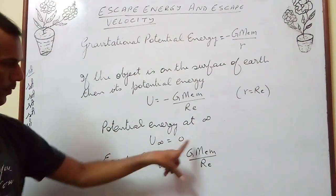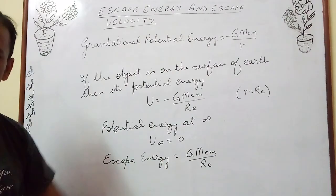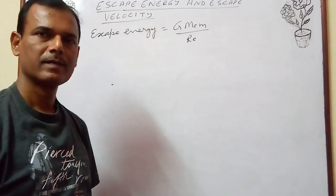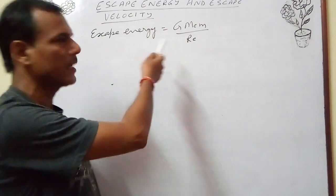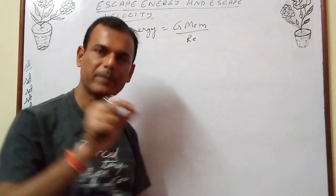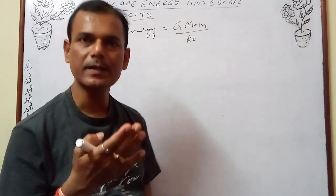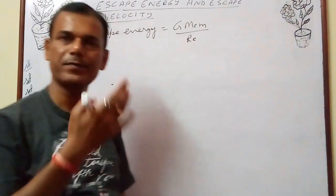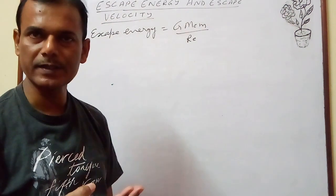The formula for escape energy is G·Me·m/Re. The minimum velocity given to an object to escape to infinity is called escape velocity.